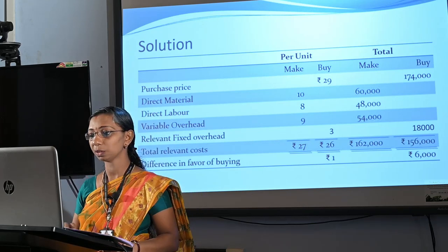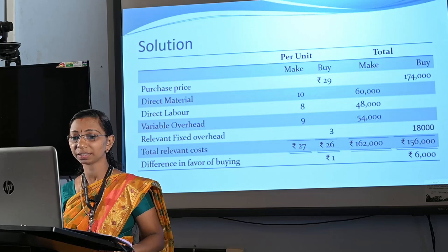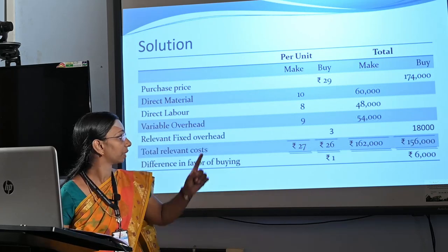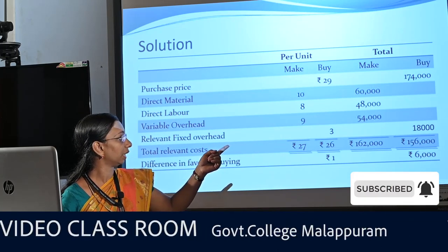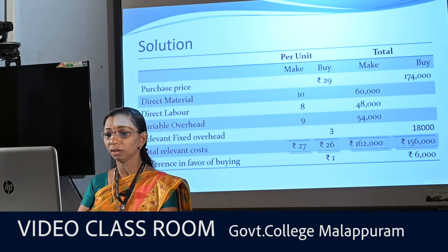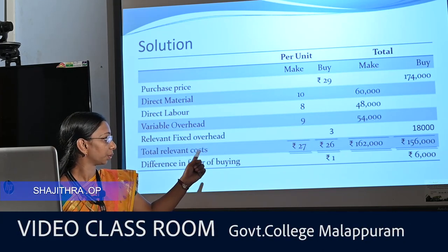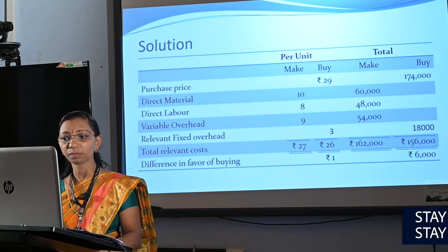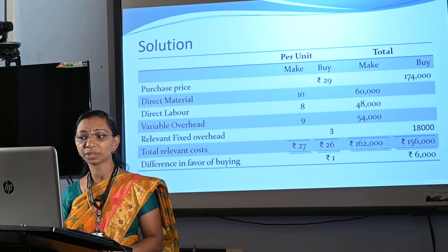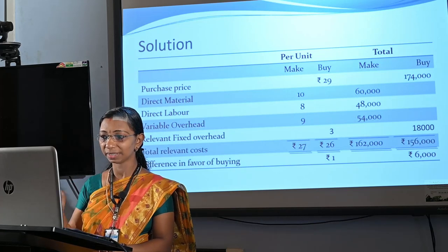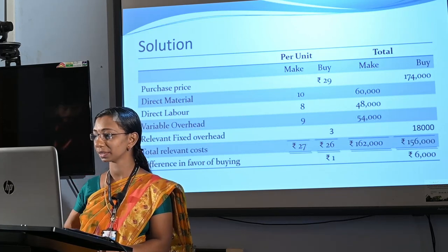The direct material cost is Rs. 10 per unit and total Rs. 60,000 because 6,000 units are produced. Then direct labor Rs. 8 per unit and total Rs. 48,000. Therefore, the total relevant cost of manufacturing is Rs. 27 per unit and the total cost is Rs. 27 into 6,000, that is Rs. 1,62,000. The cost of purchase is Rs. 29 per unit, therefore purchase price is Rs. 29 into 6,000, that is Rs. 1,74,000.